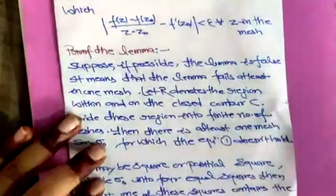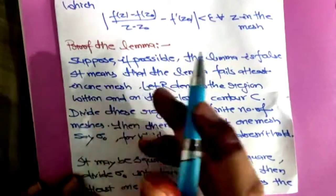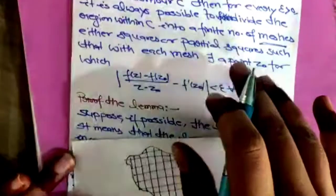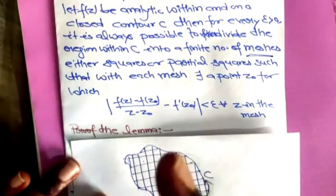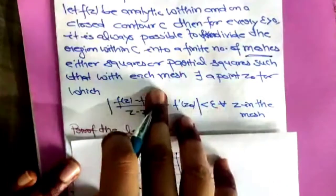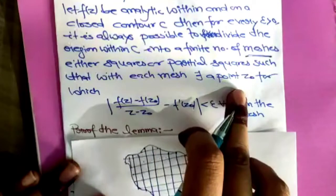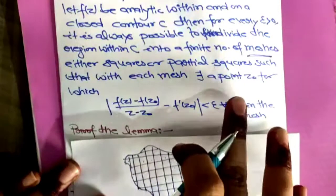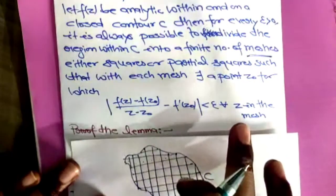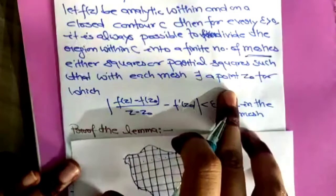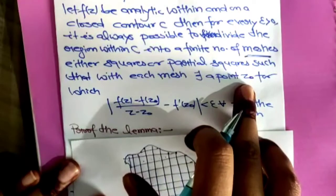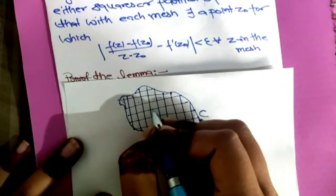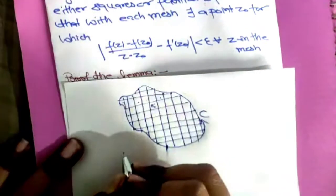Just suppose — I will make you understand with a picture first. We are going to suppose that this lemma is false. We take as our assumption that the lemma is false. The lemma says f(z) is analytic and we find a point Z0 in each square or partial square for which f(z) is analytic. But we let it be wrong — it is not going to be analytic for every point Z0. So we are going to take a section, say this mesh, and denote it by Sigma0.